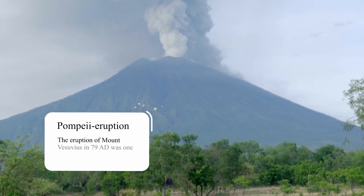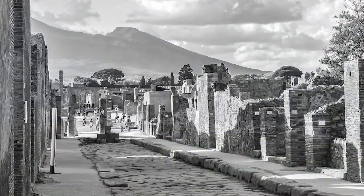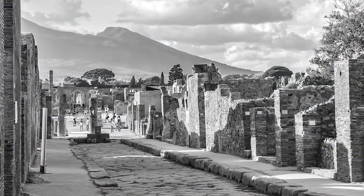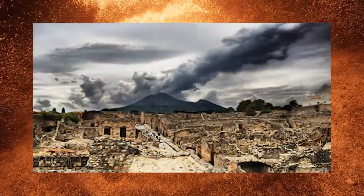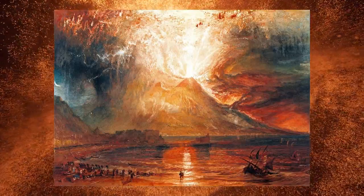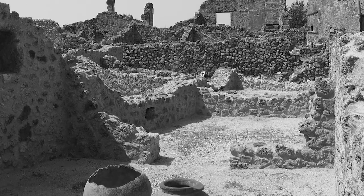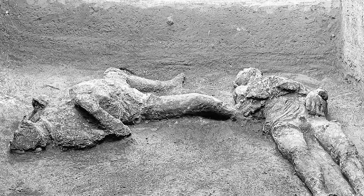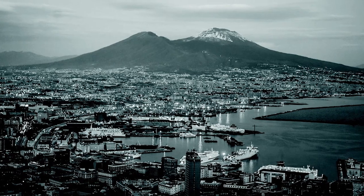The eruption of Mount Vesuvius in 79 AD was one of the deadliest volcanic eruptions in history. It killed an estimated 16,000 people and buried the entire city of Pompeii under 20 feet of ash and lava within minutes, preserving the Roman city like a snapshot in time. The eruption began on August 24, 79 AD with earthquakes and explosions, climaxing with a massive explosion that sent a column of ash and gas 21 miles into the atmosphere.